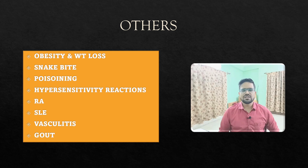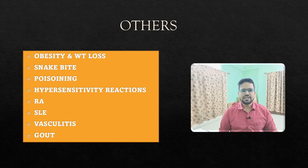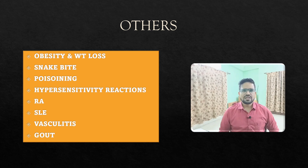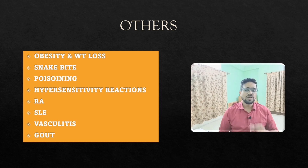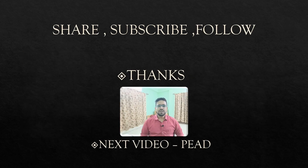Other important miscellaneous topics you must read before the exam: obesity and weight loss — they alternate between asking about obesity and weight loss in different papers. Snake bite and poisoning is a favorite topic, asked in different previous year papers. Hypersensitivity reactions are very important. Rheumatoid arthritis will definitely have one or two questions — it has been asked repeatedly in the last five to six years. SLE, vasculitis, and gout — they've been asking about gout and pseudogout for the last three years.